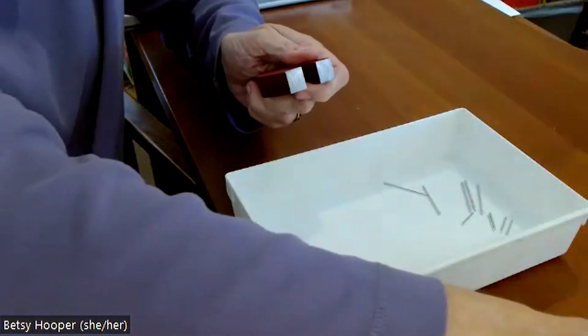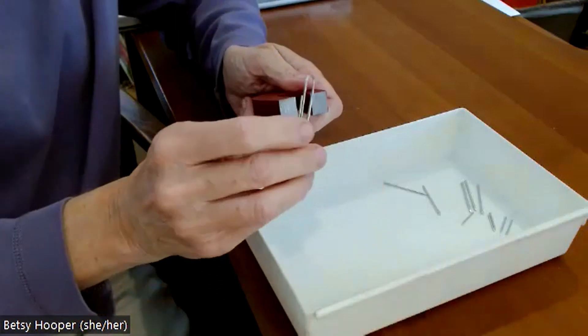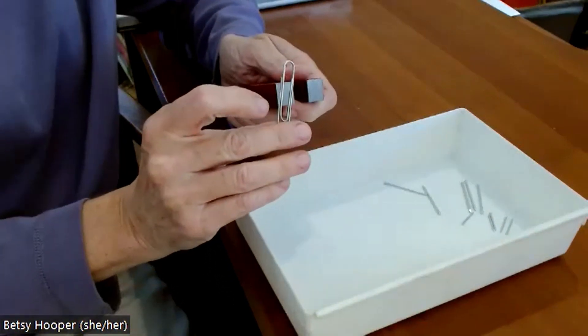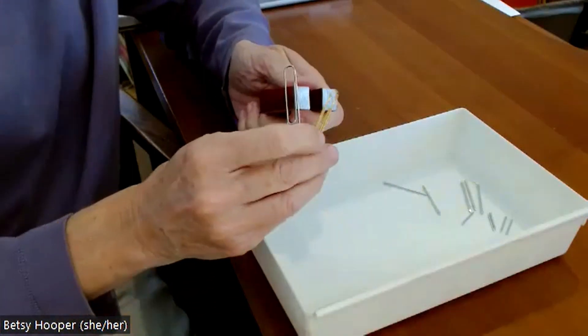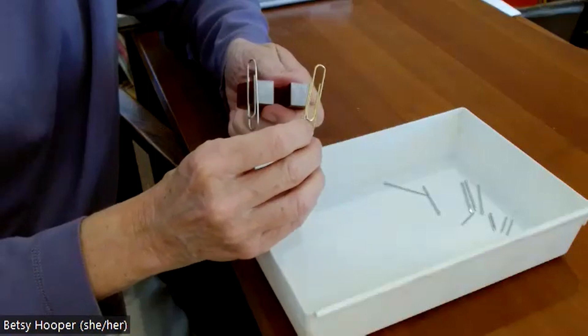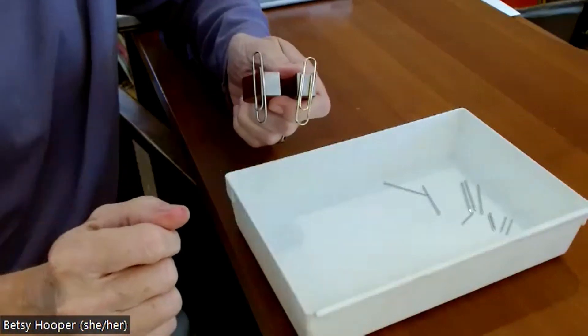So short nails and long nails both stick. But what about other things? Those nails are silver, like this paperclip. Does the paperclip stick? Yep. But what if it's a different color of paperclip? Do you have to be silver to stick to the magnet? Nope.